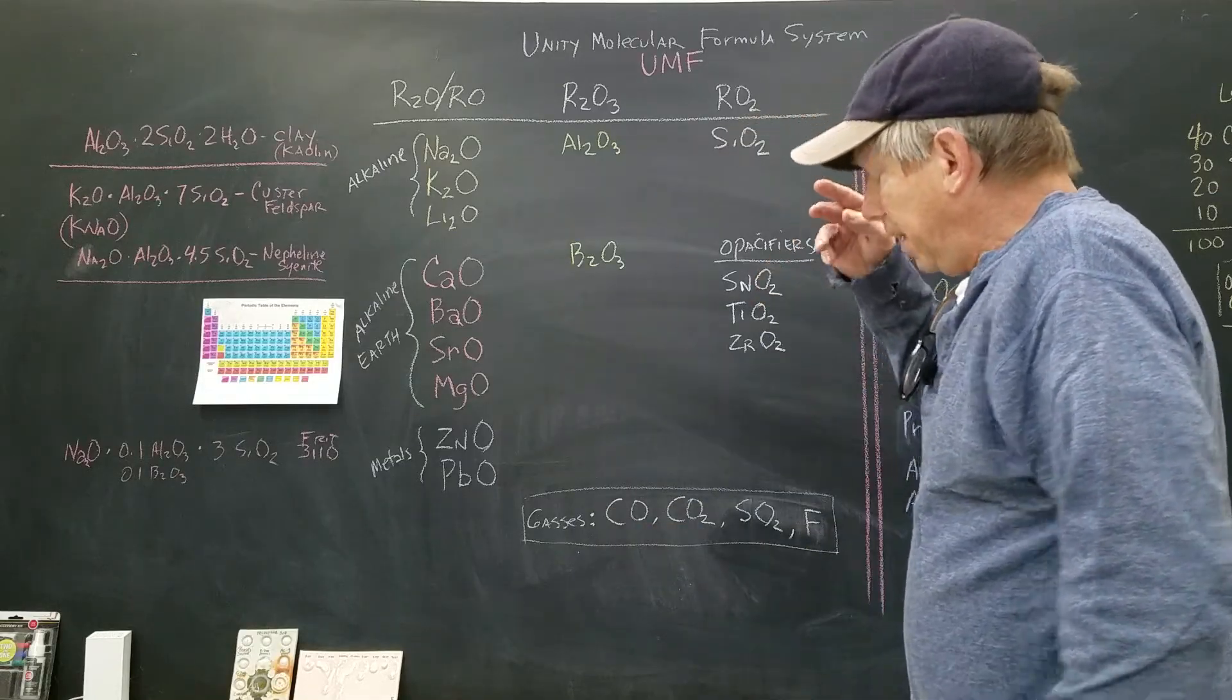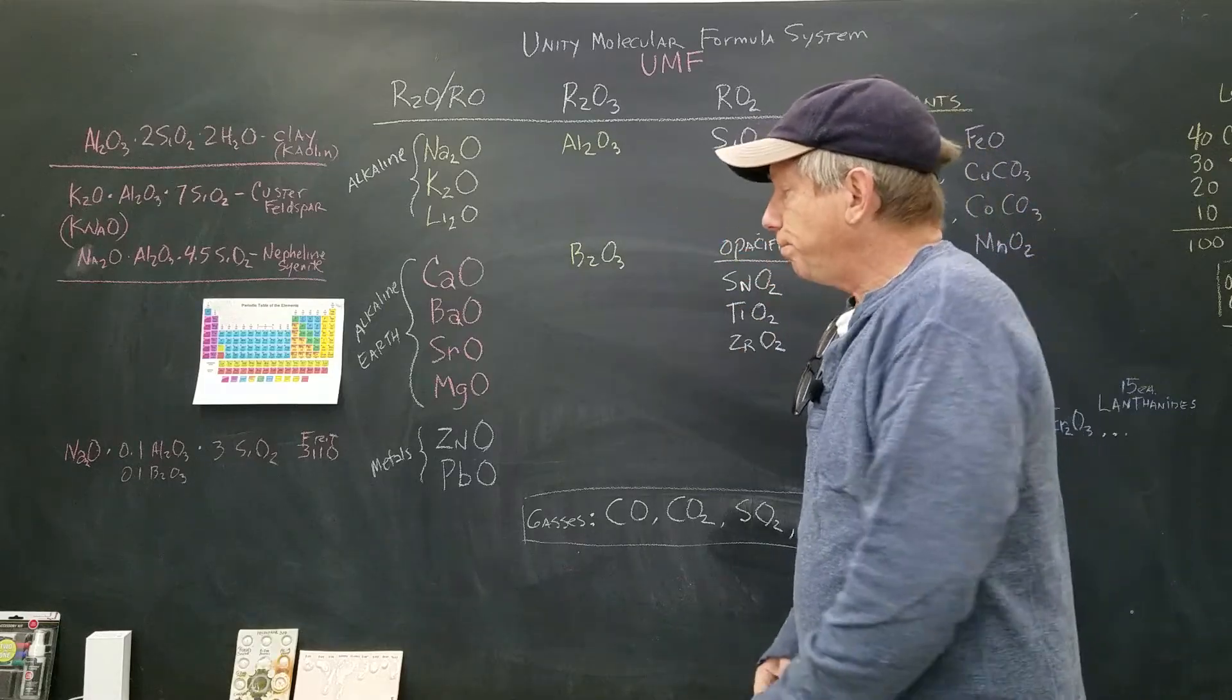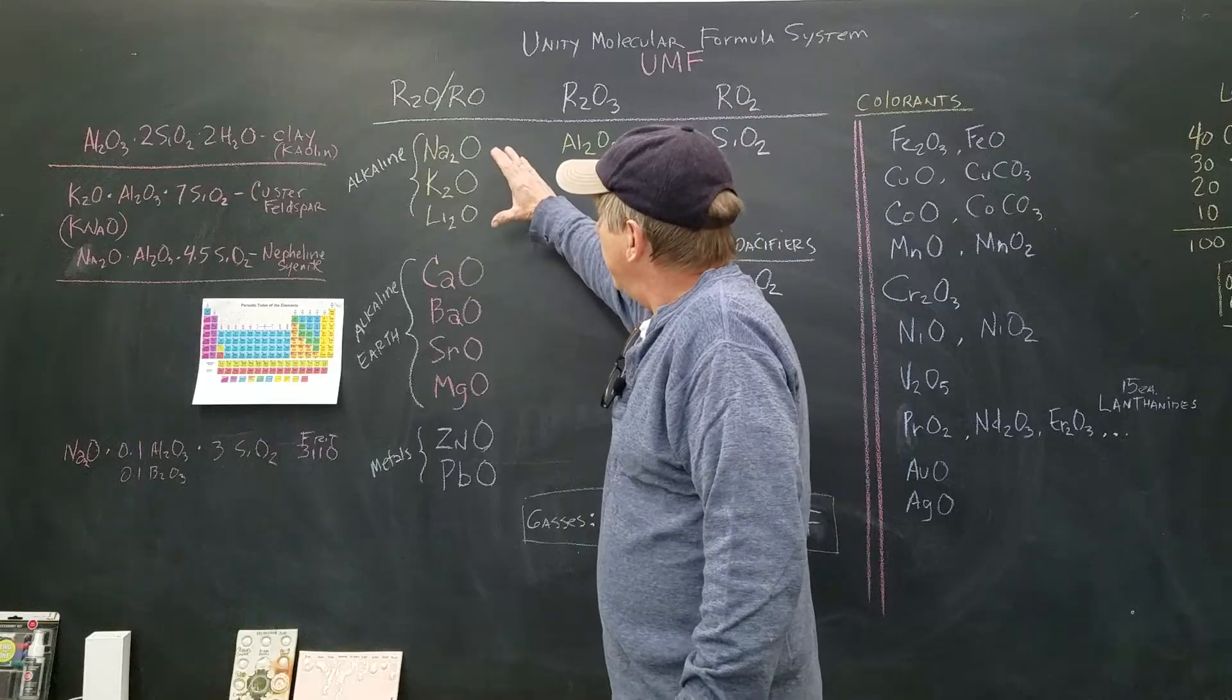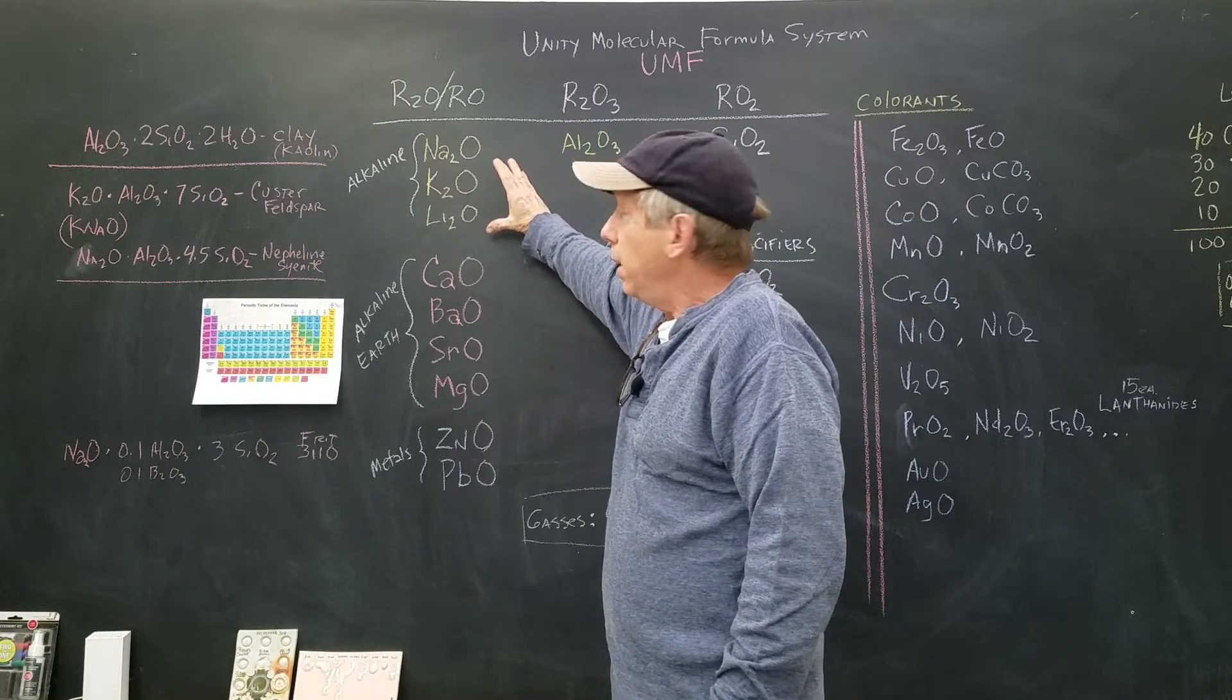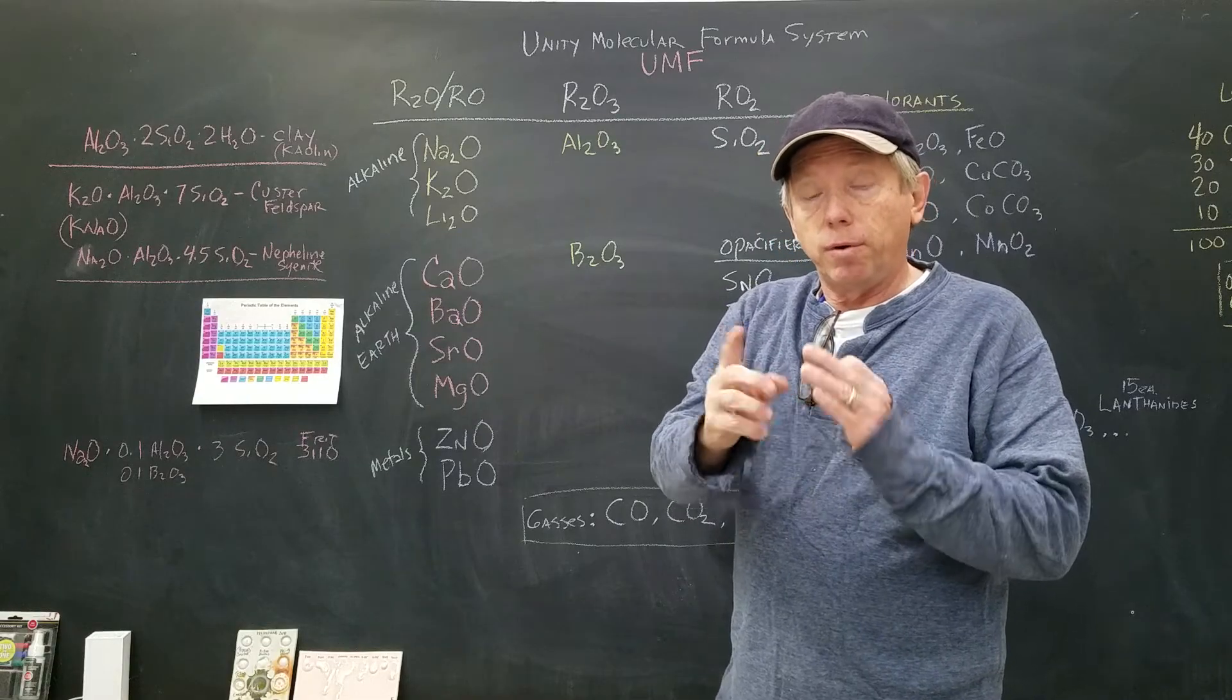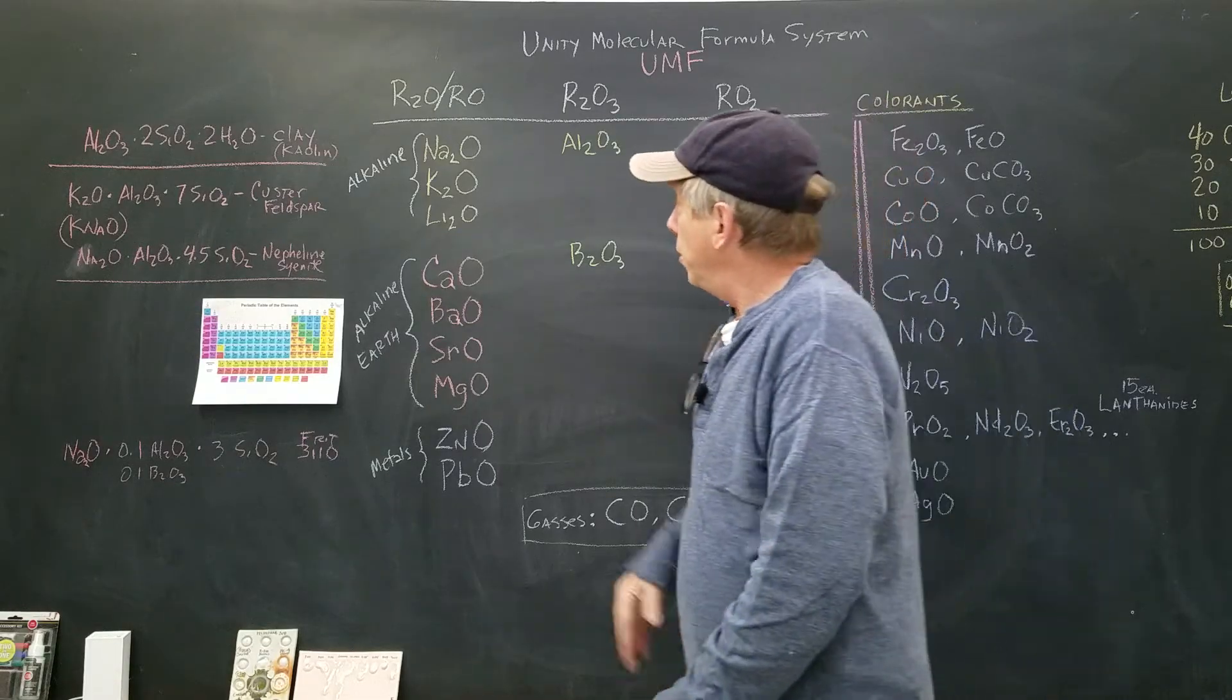What he developed was three columns here. A glaze is a flux, a refractory, and a glass former. That's what makes it up. So here's our fluxes, here's our refractory, here's our glass former.